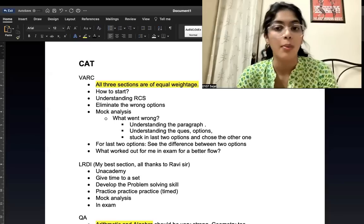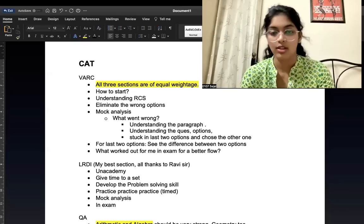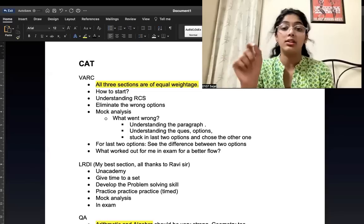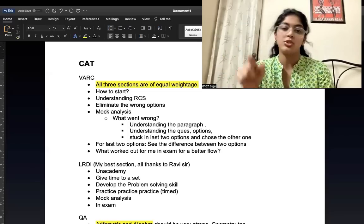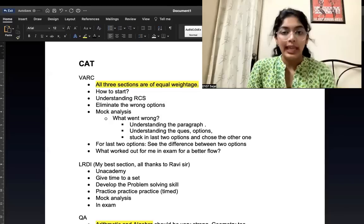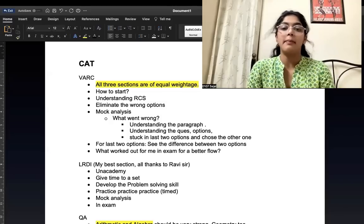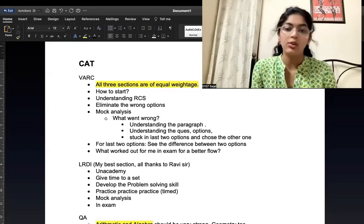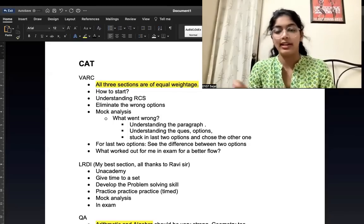Eliminating the wrong options. This is what everyone does in VARC. You need to do that as well. So instead of picking the right one, like out of four options, if you pick the right one instead, go with eliminating the wrong options. For example, see what's wrong in A, what's wrong in B, what's wrong in D, and then go with C instead of just directly picking C.